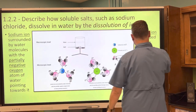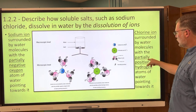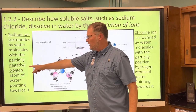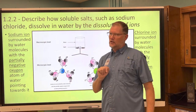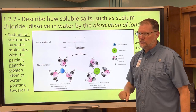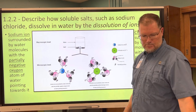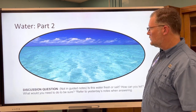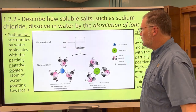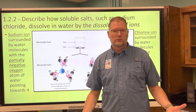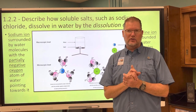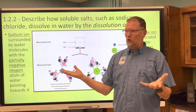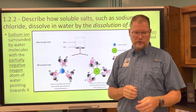The partially negative chlorine ion is attracted to the partially positive hydrogen sides of water, and the sodium ion is attracted to the partially negative oxygen sides. That is the last slide — any questions at this point?